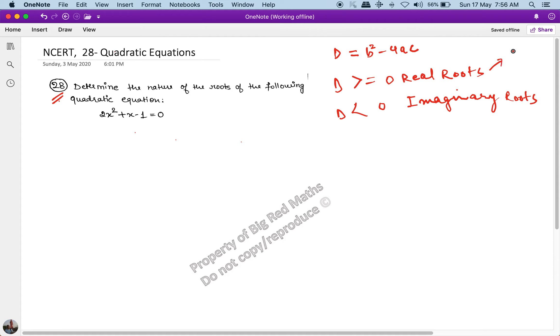There is a special case: if D is exactly equal to zero, then it has equal roots.